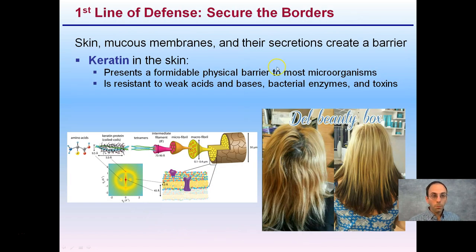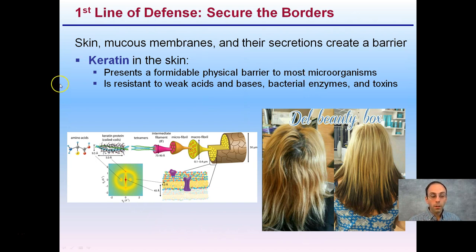So more specifically, securing our borders — that first line of defense, that skin, those mucus membranes. You may remember keratin in the skin, a component of our hair, which prevents or acts as a very strong physical barrier to most microorganisms. It's also resistant to weak acids and bases, bacterial enzymes, and toxins. So keratin is a very strong substance and acts as a great physical barrier.